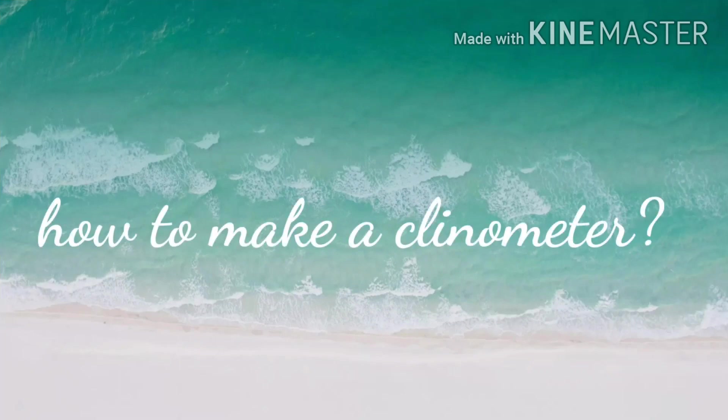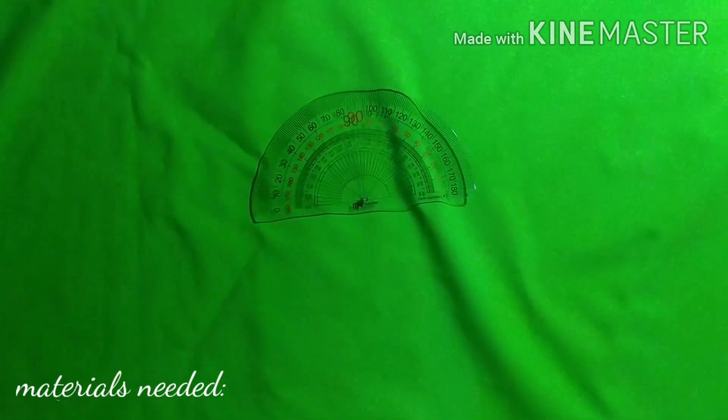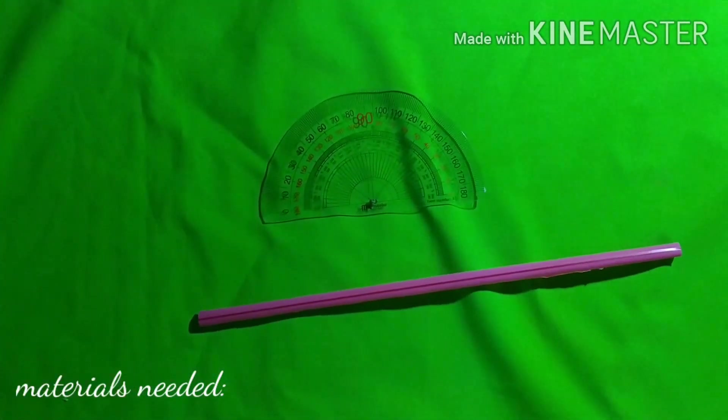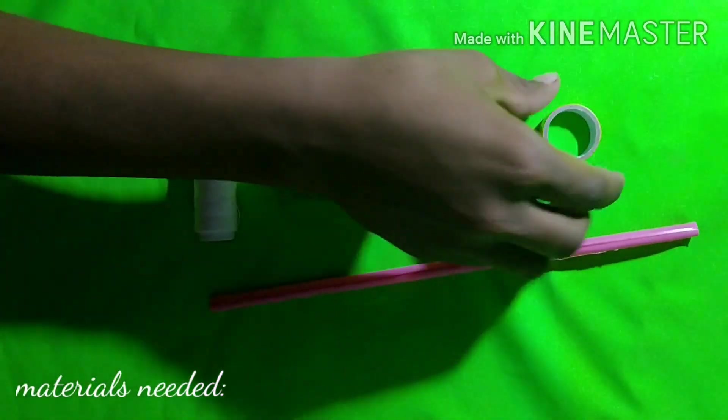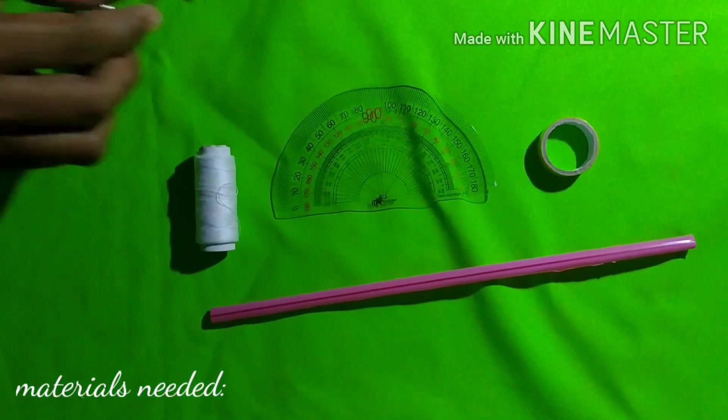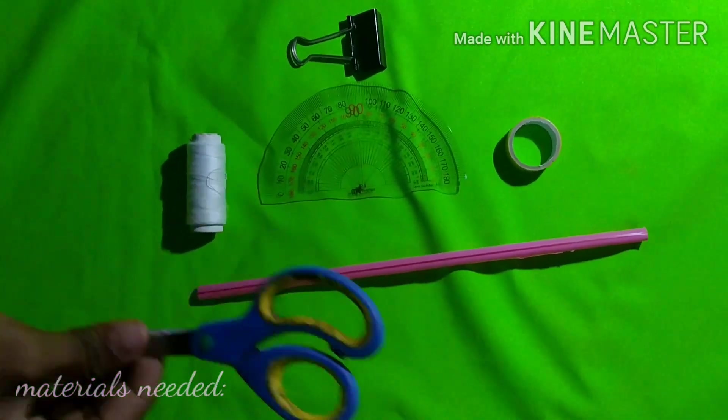How to make a clinometer. The materials needed for a clinometer are a protractor, a drinking straw, thread, scotch tape, a clip, and a pair of scissors.